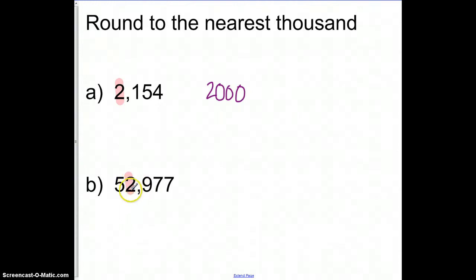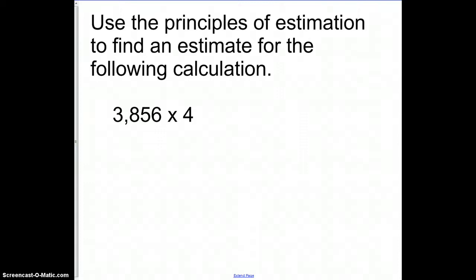So in this one, I'm gonna round here. This number that comes after it is five or greater. So that means this 2 is now going to become a 3. And then I'm gonna add zeros.